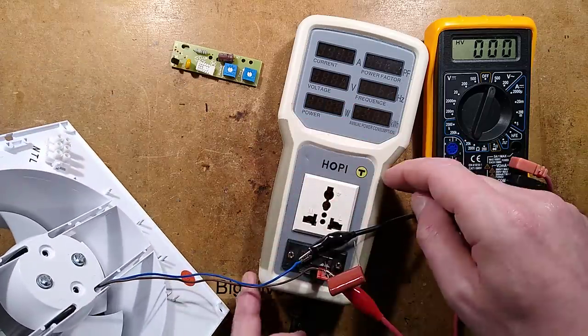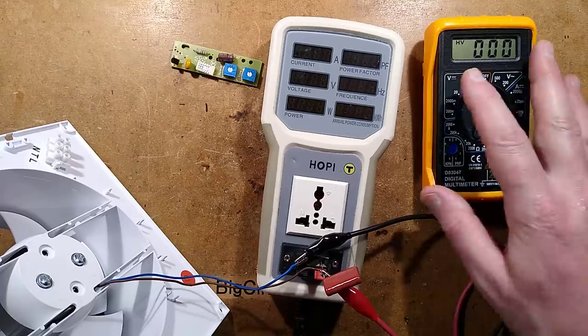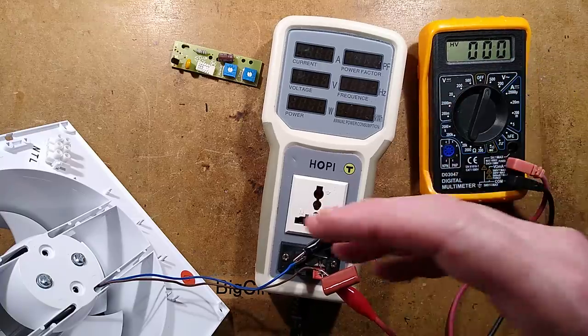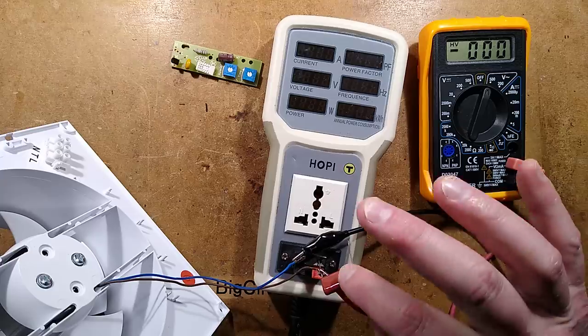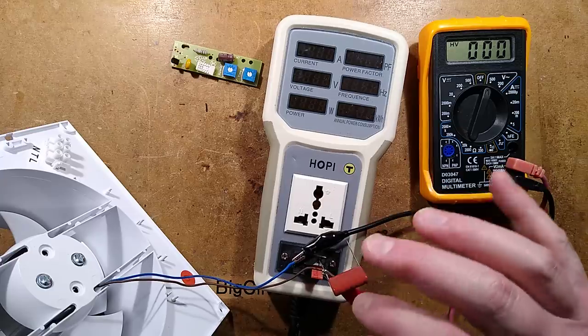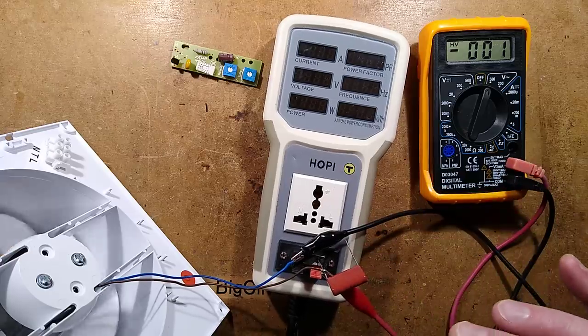I've got the fan connected to the HOPI and I'm going to plug the HOPI in. This meter is showing the voltage across the fan, but I've got a capacitor here and it's not in circuit yet. Let's take a look at the fan before we add the capacitor.